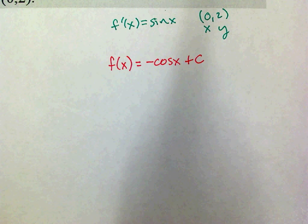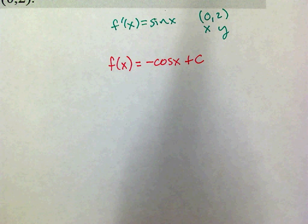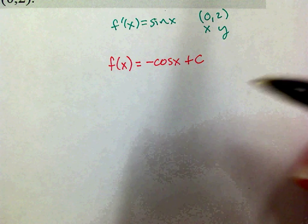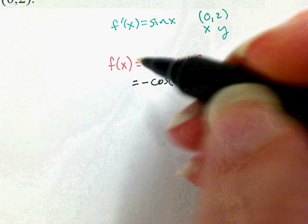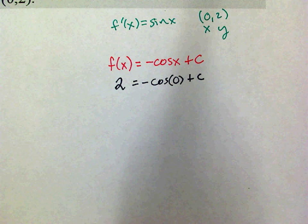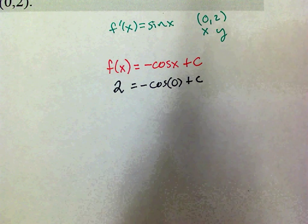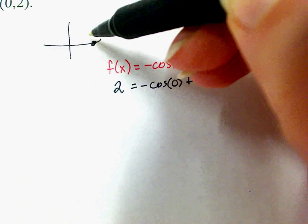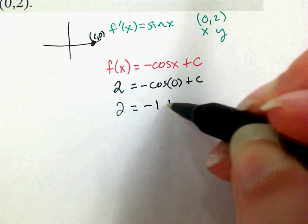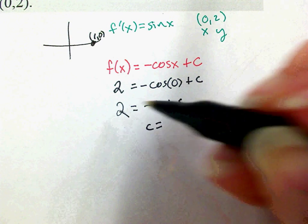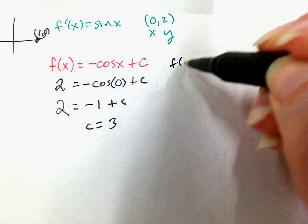What am I going to do with that coordinate point? I know that when x equals 0, f of 0 equals 2. So then I can solve for the constant. What is cosine of 0? Remember, cosine in a circle, cosine of 0 is 1. So I'm left with 2 equals negative 1 plus c. C equals? I'm going to go with 3. So final answer? Negative cosine plus 3.